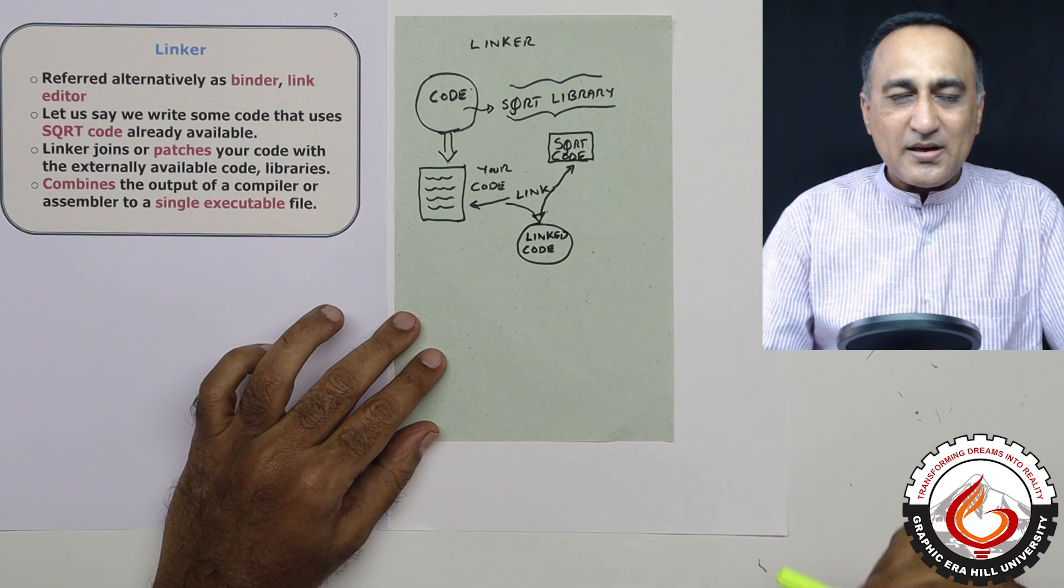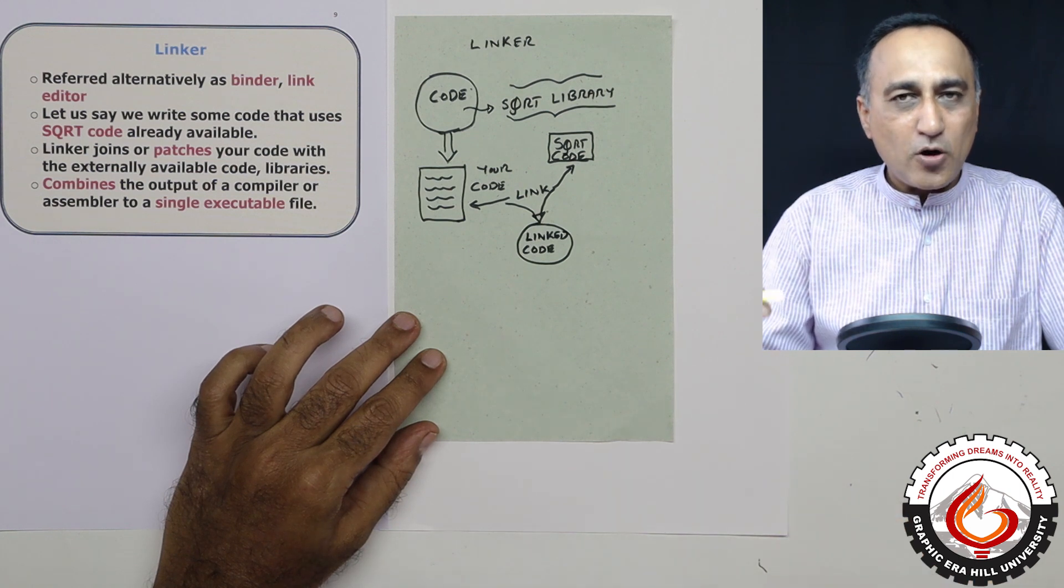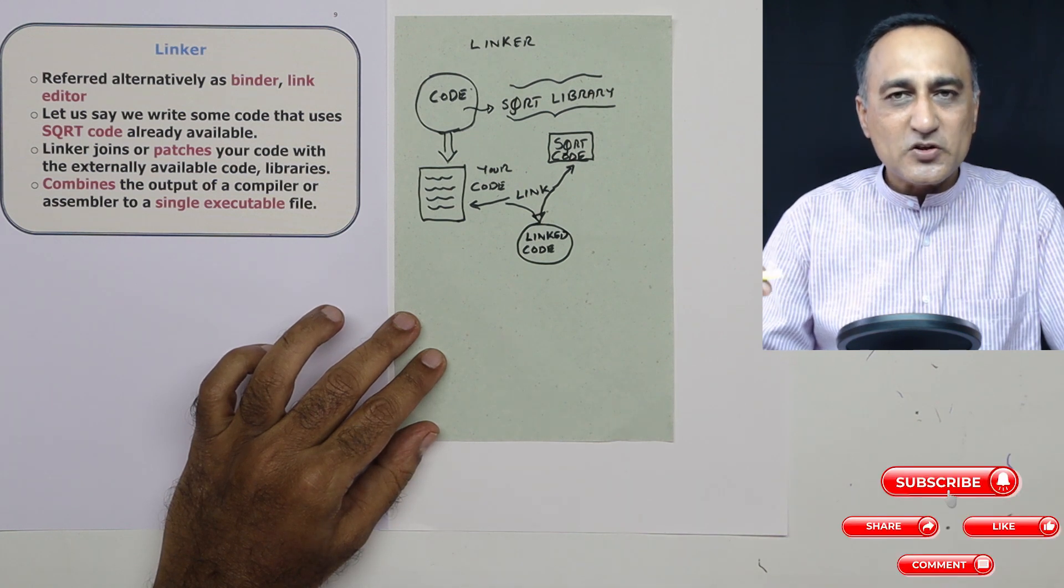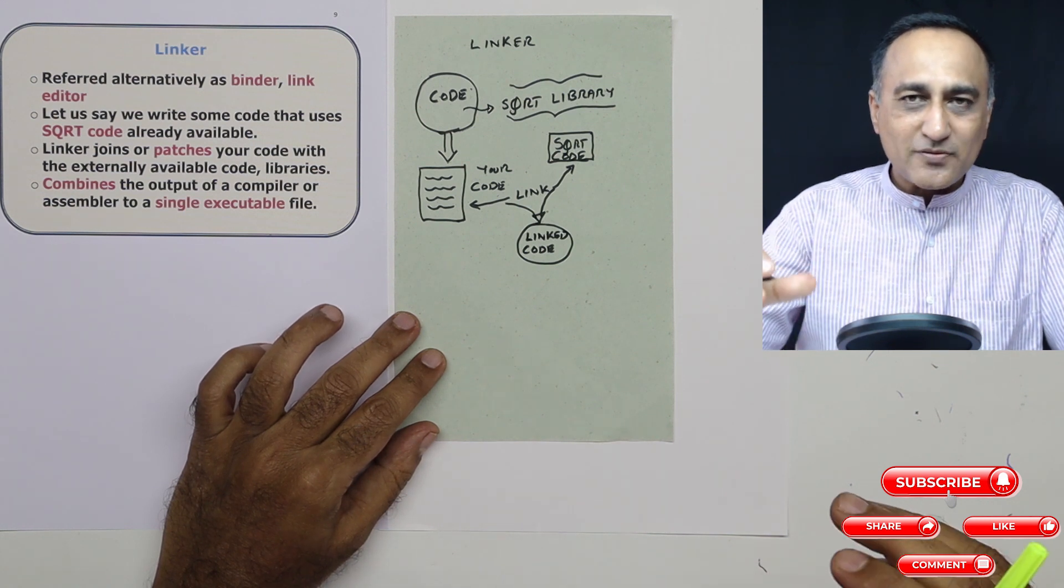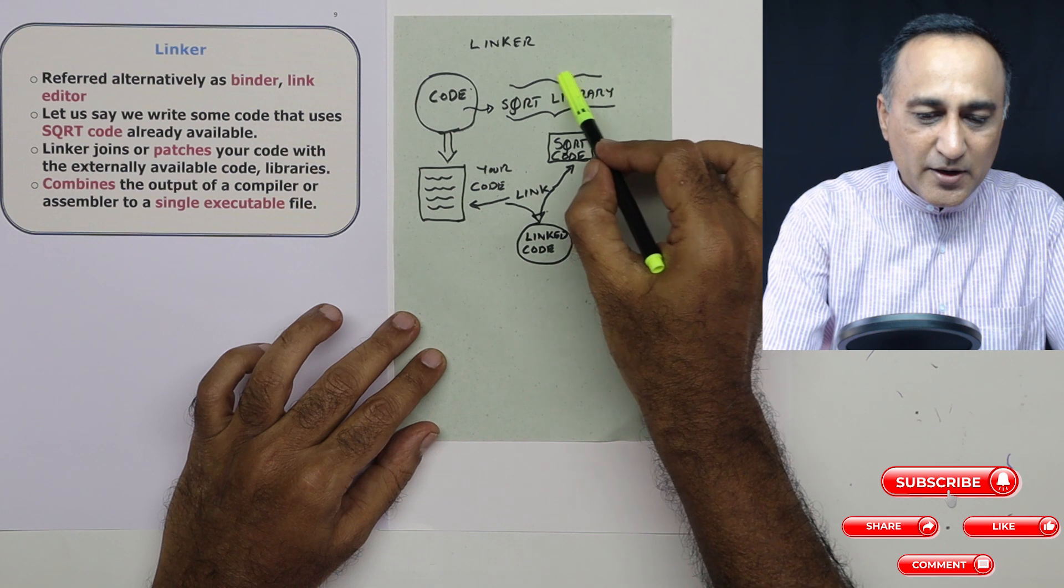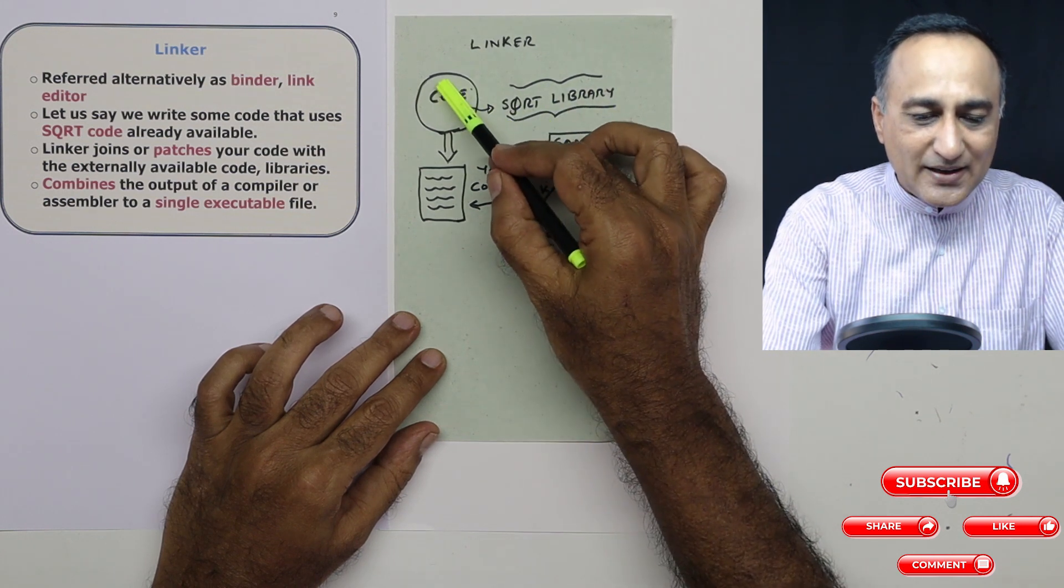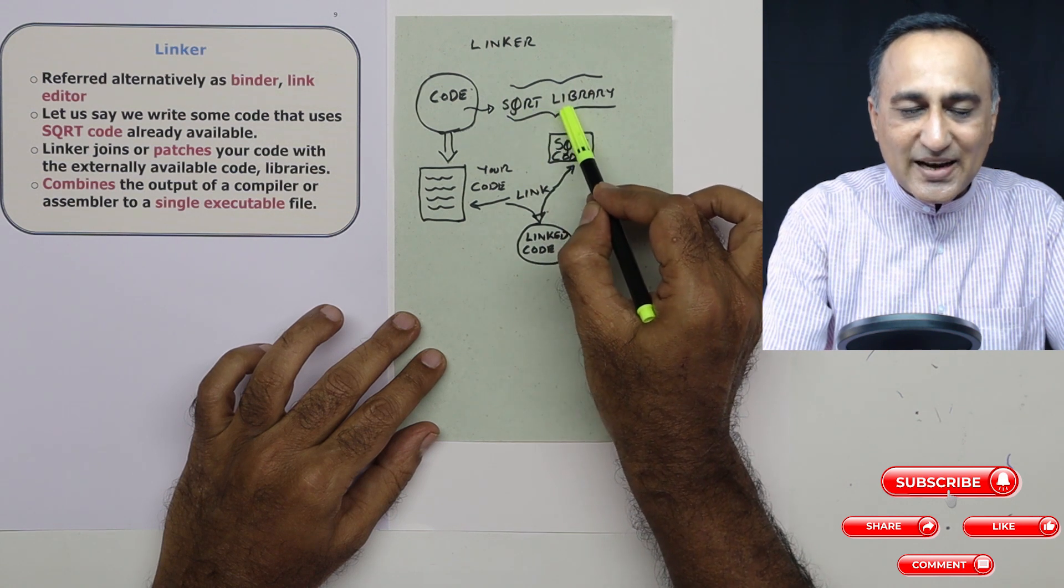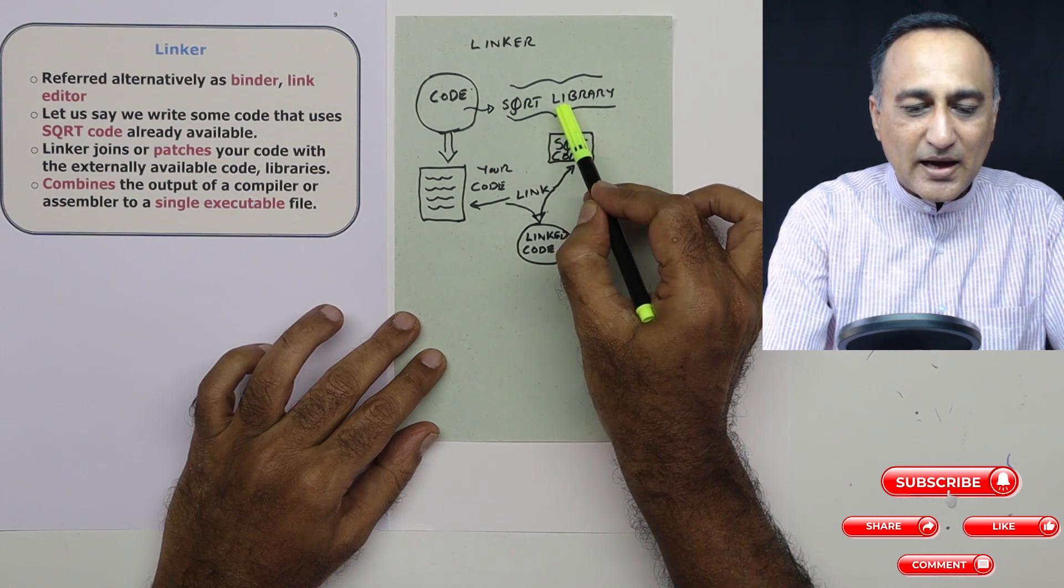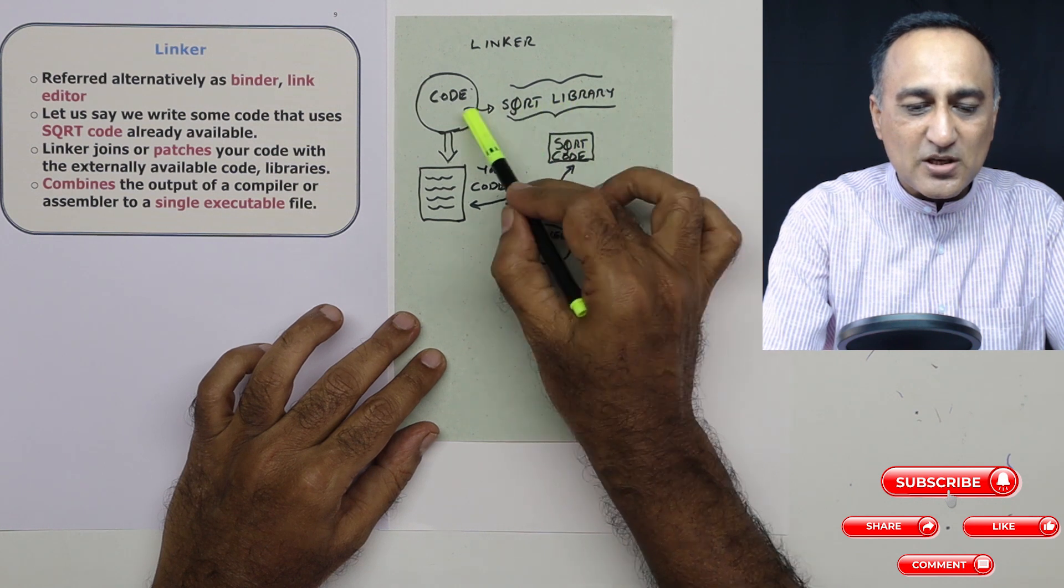Now if you write a program in any high level language, you will almost never be writing your own square root routine or code. What you will be doing is most of the high level languages will provide you something called a library. So you will write rest of the code, and in your code you will include this library to tell that I am using this library which gives me the square root.